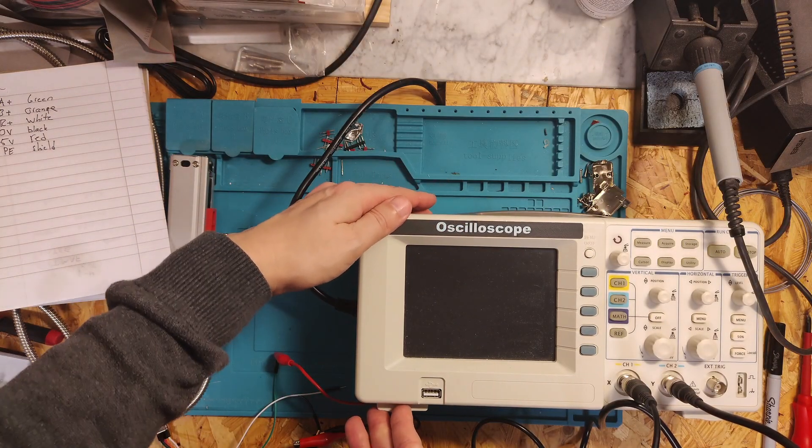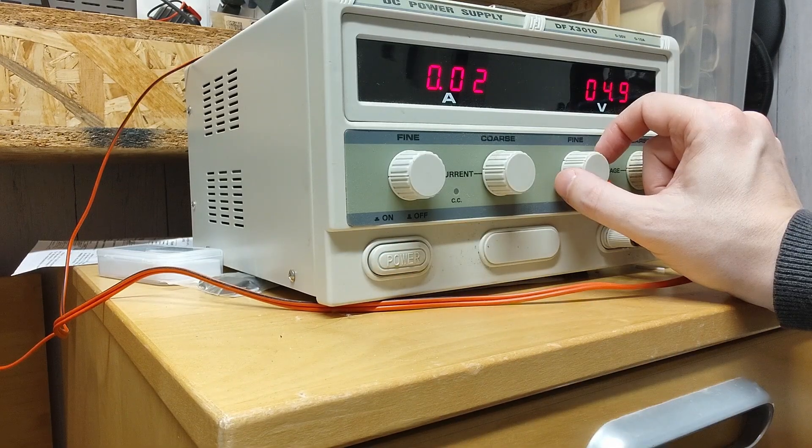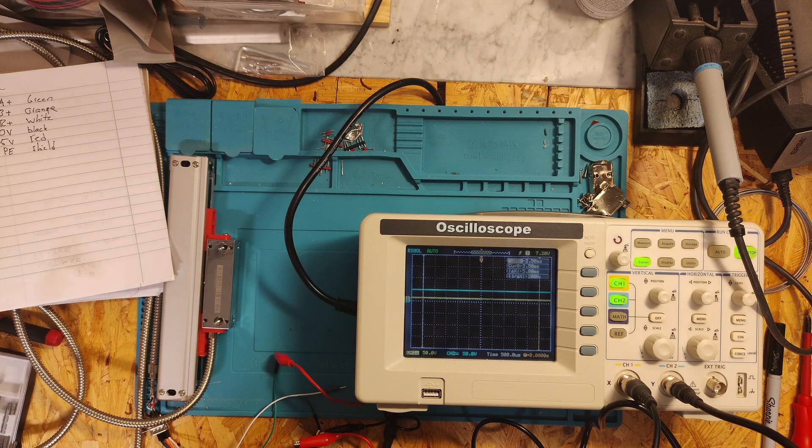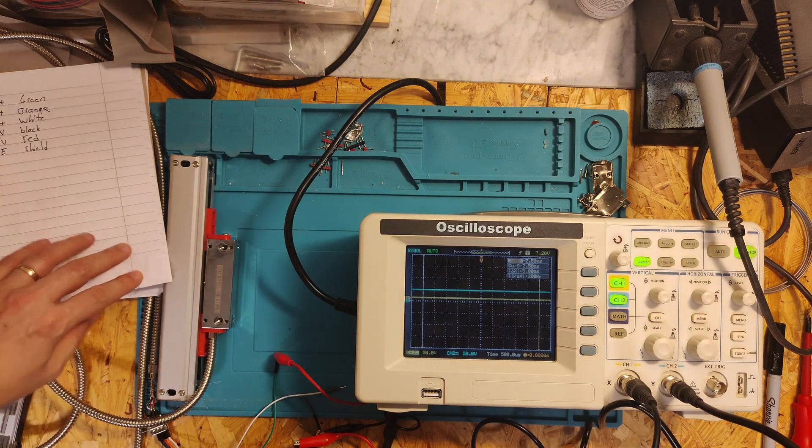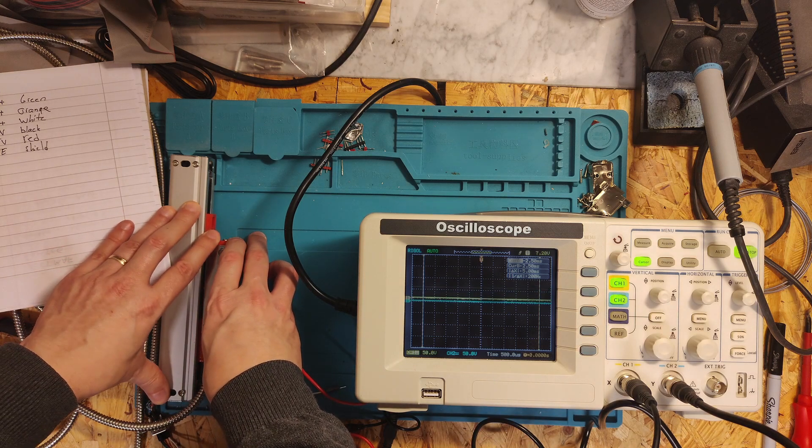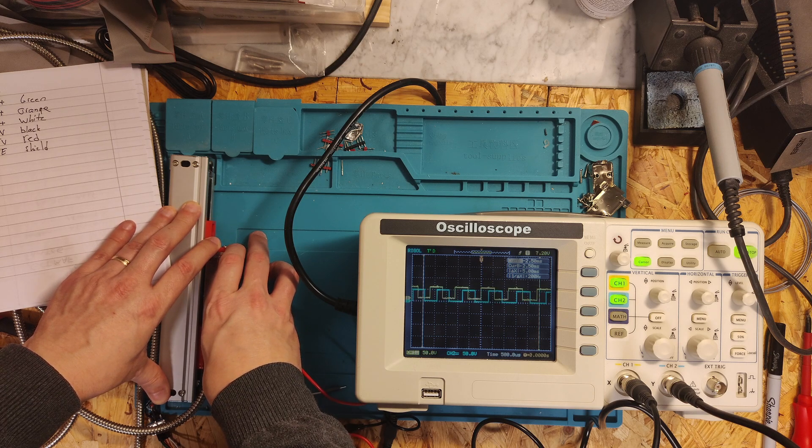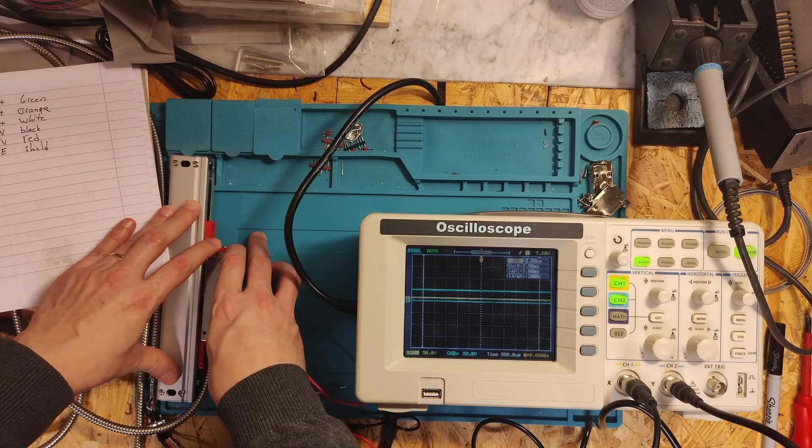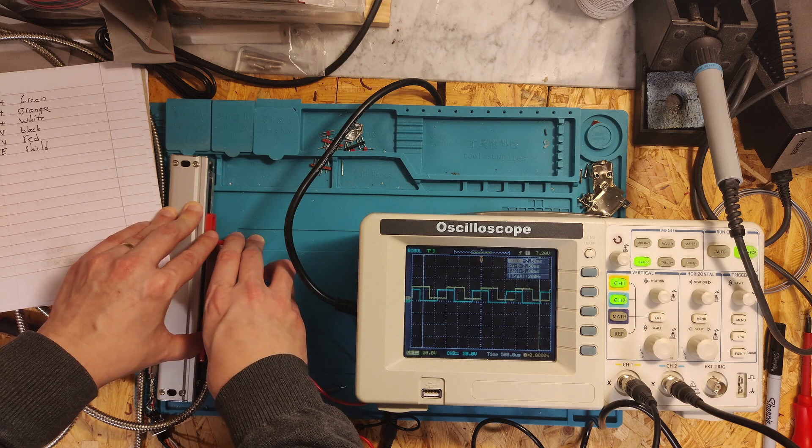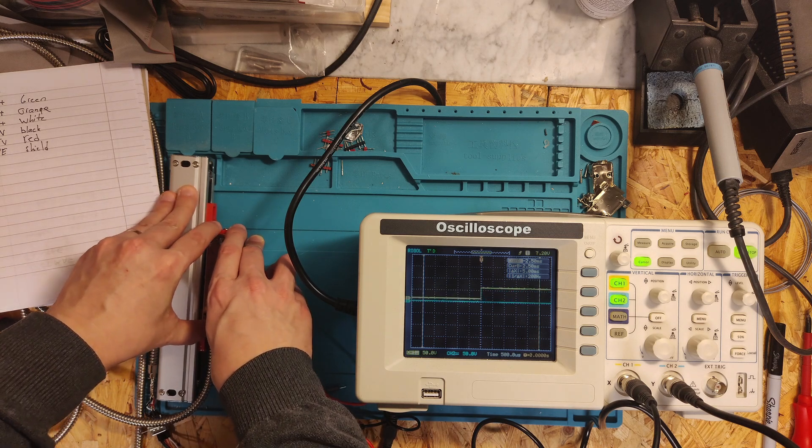If we have wired everything correctly, we should be able to see the A+ and B+ positive pulses when we move the linear scale, and yes, that's exactly what we can see here. If we move it downwards, then we see that the yellow pulse comes first, and likewise if we move it upwards, we should be able to see the blue one come first, which is exactly what we are seeing here. Nice!